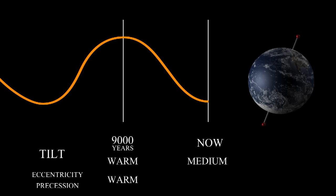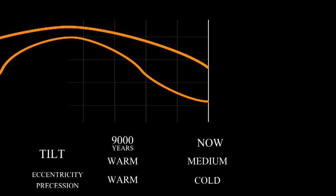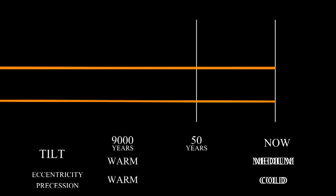What's been going on the last 50 years? If we zoom in, we see that nothing has happened. The Milankovitch cycles are very slow, and nothing has changed within 50 years.